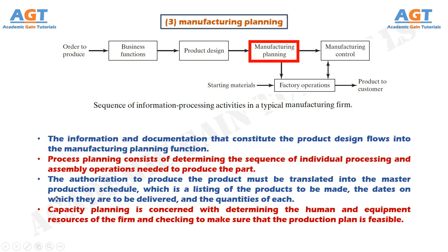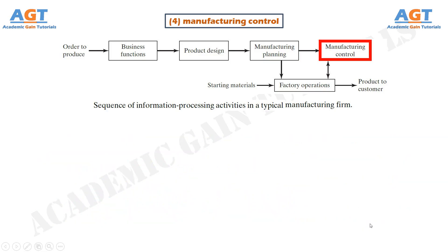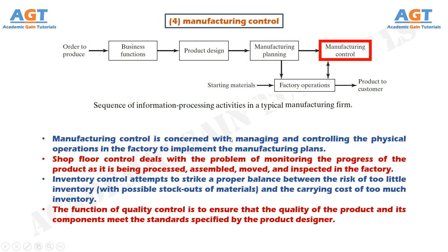The master schedule must not list more quantities than the factory is capable of producing each month with its given machines and manpower. Capacity planning is concerned with determining the human and equipment resources of the firm and checking that the production plan is feasible. Manufacturing control manages and controls the physical operations in the factory to implement the manufacturing plans, with information flowing from planning to control and back and forth with factory operations. Included in this function are shop floor control, inventory control, and quality control.